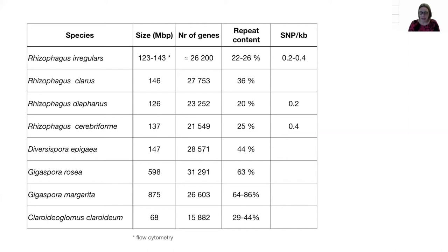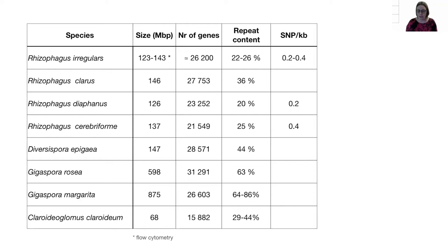Overall, the genomes are fairly large and have a high number of predicted genes, in particular when compared to saprotrophic species like Mucor and Maltriellas in their sister lineages. There's no evidence that it's an effect of genome duplication; rather, the sizes seem to be driven by expansion of repeats. The repeat content varies a lot, ranging from 20% up to 86% in Gigaspora margarita. It's a big content in most of the genomes.